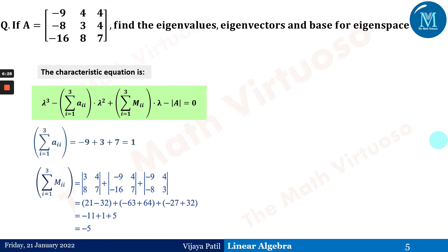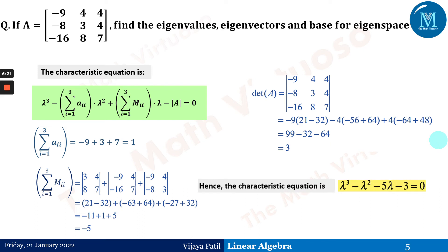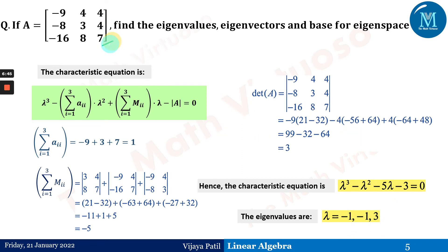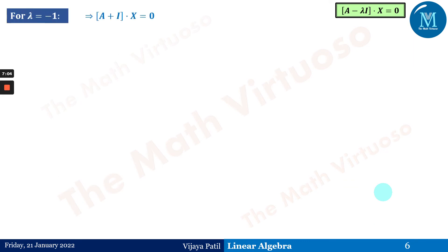Now let us look at a second similar example. Computing the summation of a_ii, summation of M_ii, and determinant, we get the characteristic equation λ³ − λ² − 5λ − 3 = 0. The eigenvalues are λ = −1, −1, 3 — pause the video and try to derive this yourself, then cross-check.